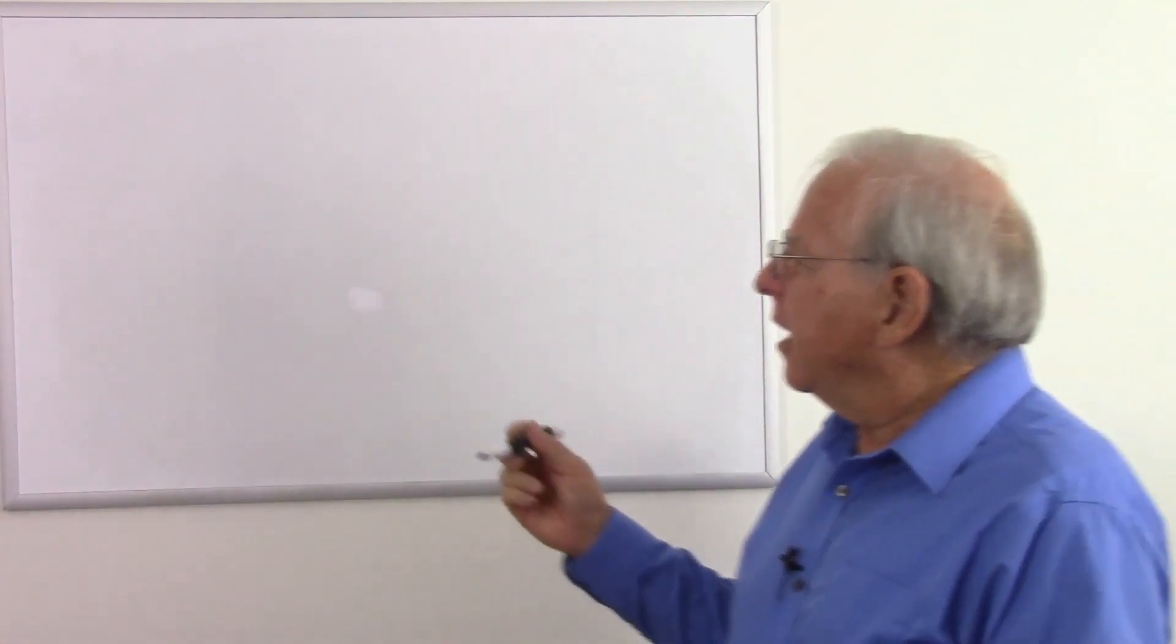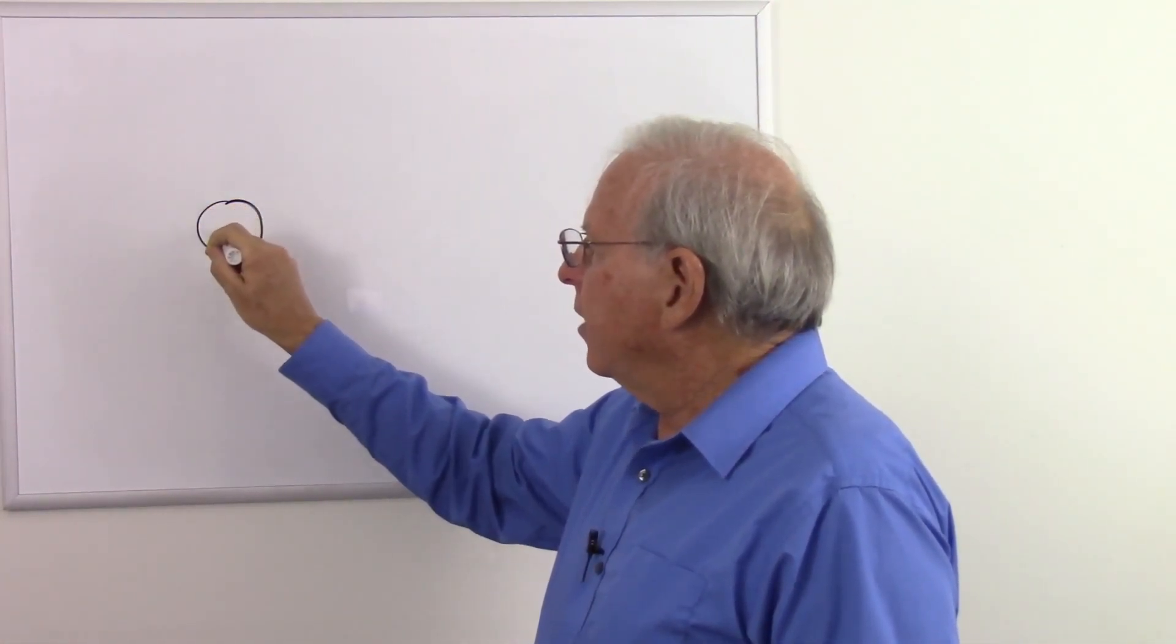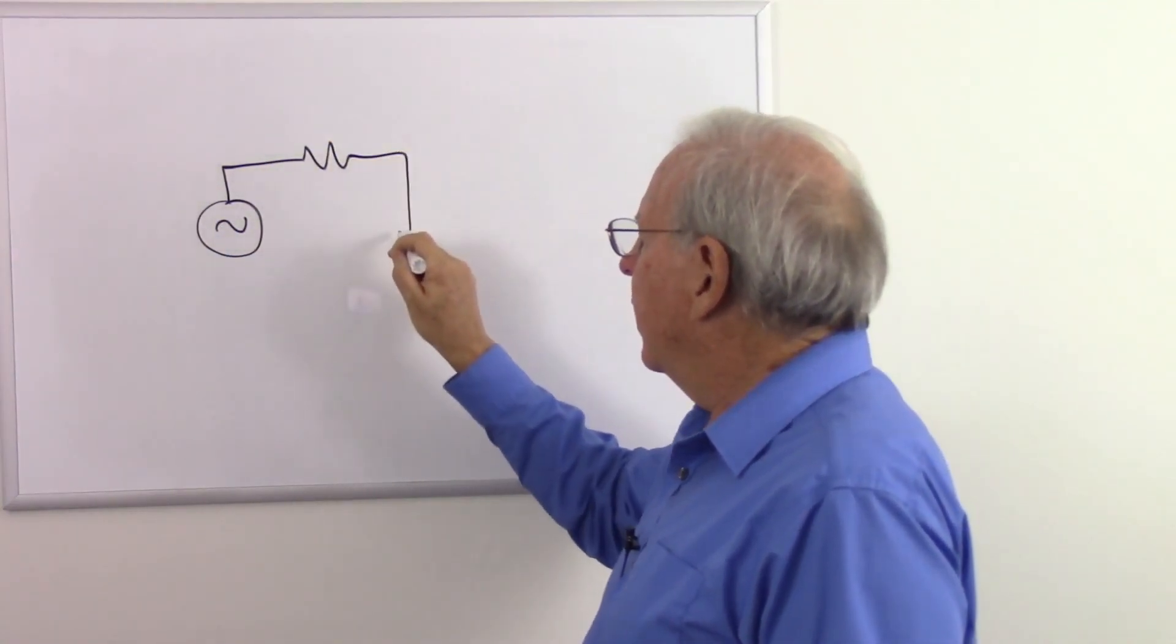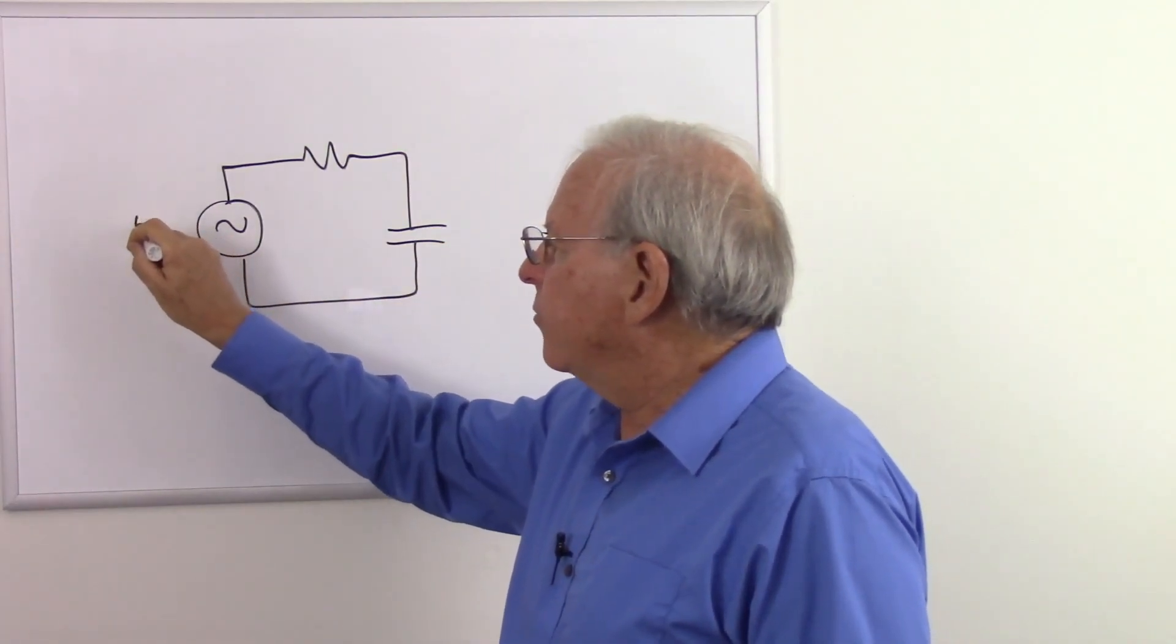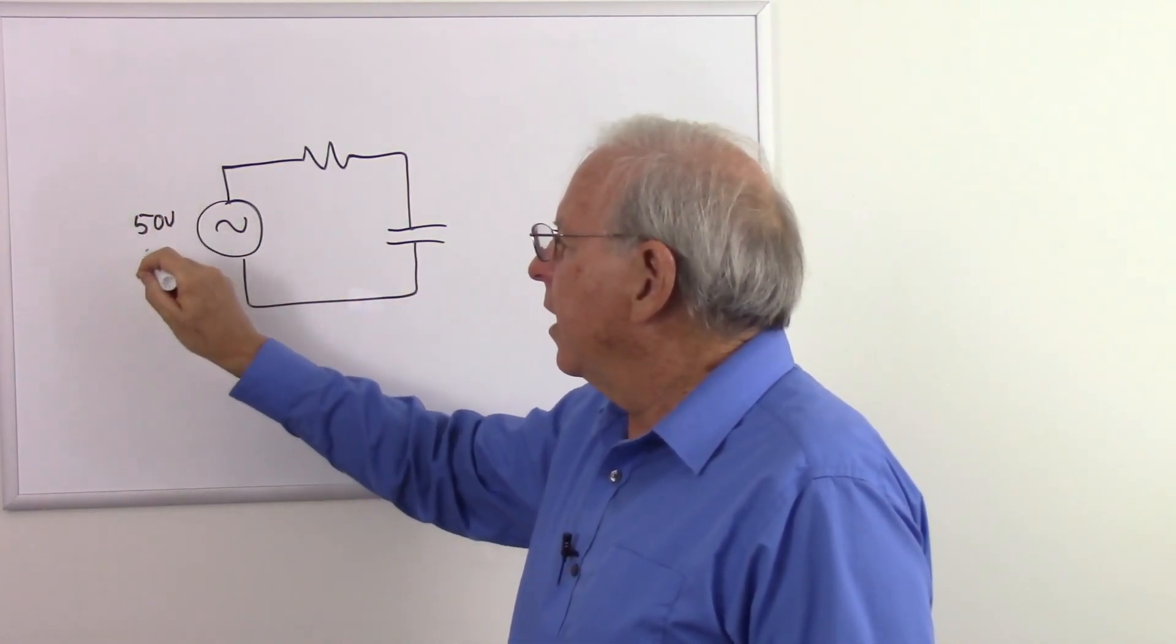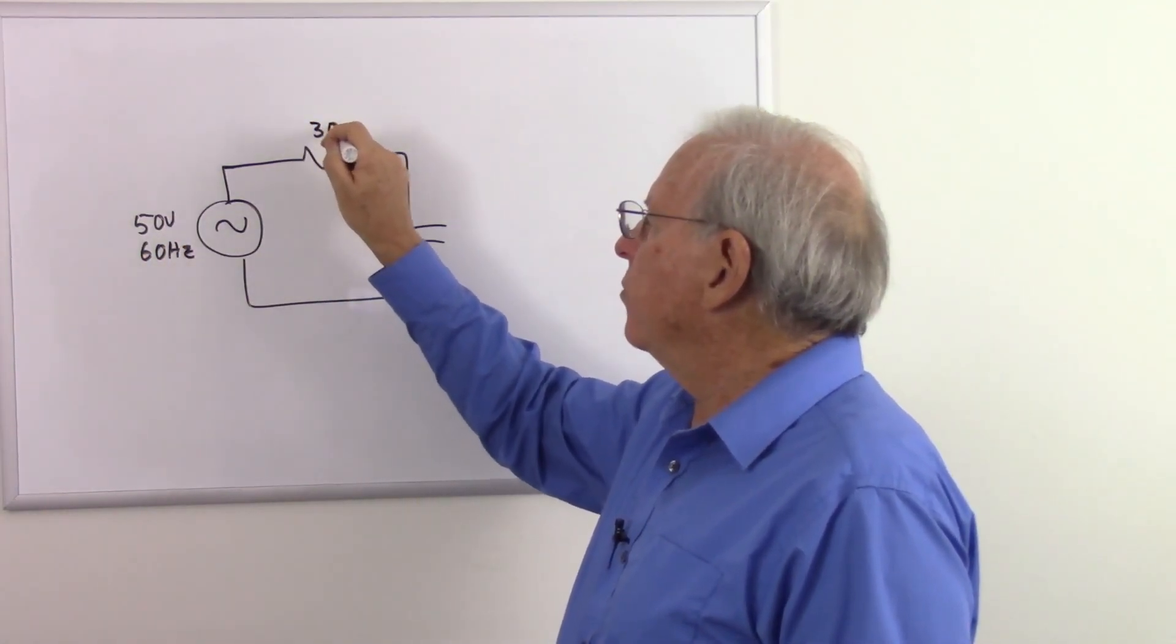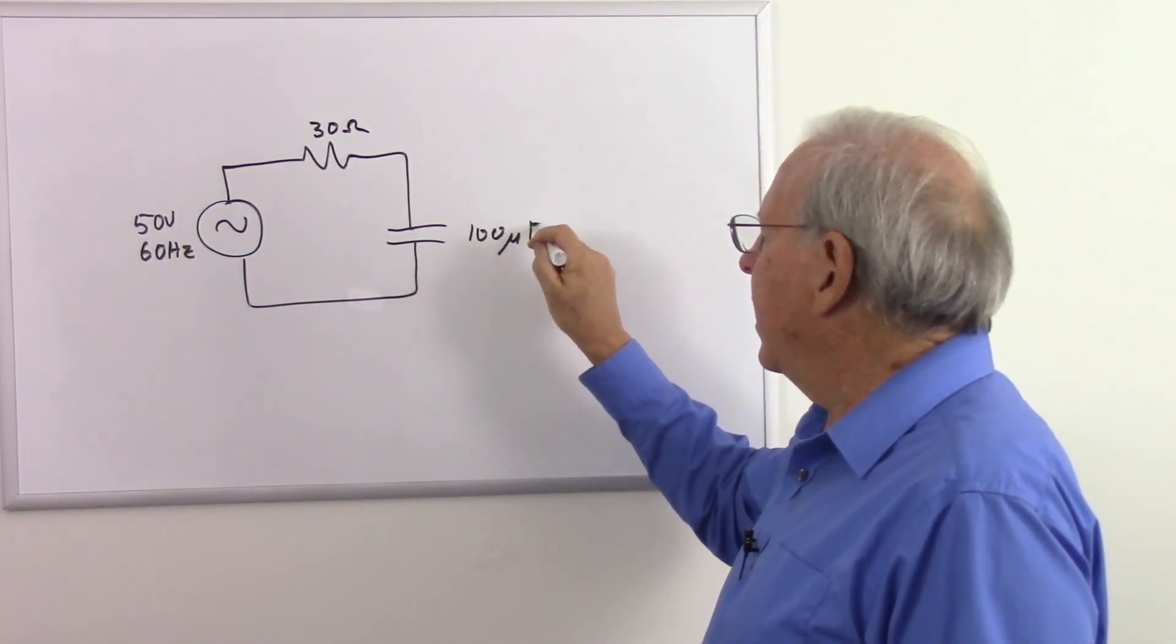So let's take a look at a circuit and see what the problem might be. We're going to have an alternating current source, and a resistor, and a capacitor. Let's make this 50 volts and 60 hertz. Make this a 30 ohm resistor and a 100 microfarad capacitor.